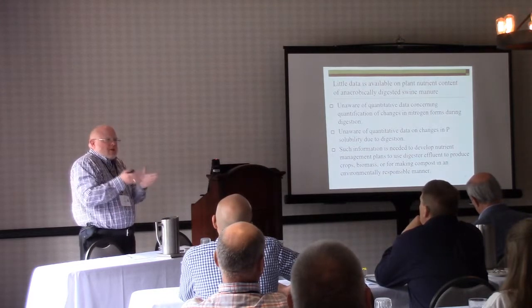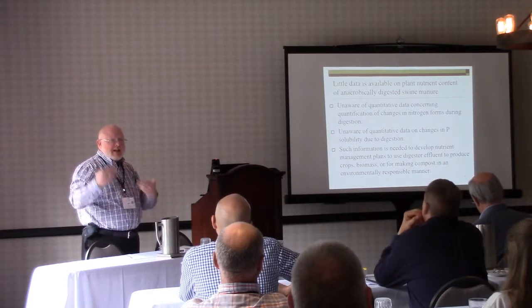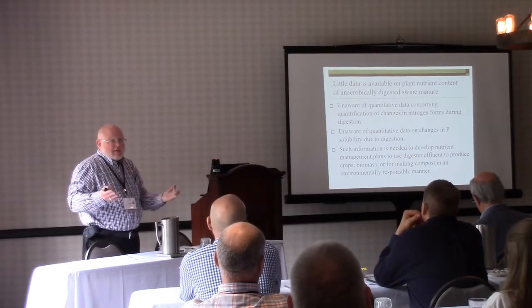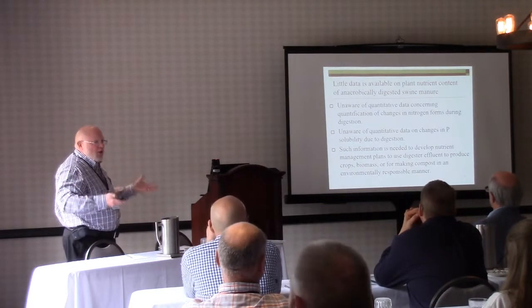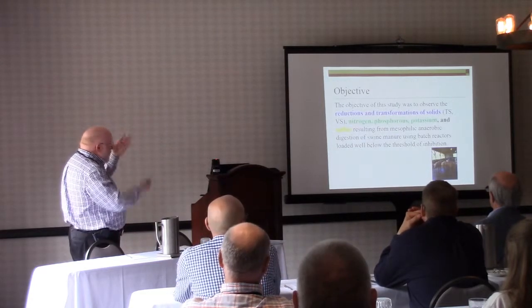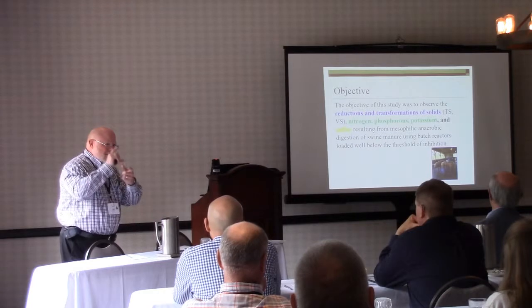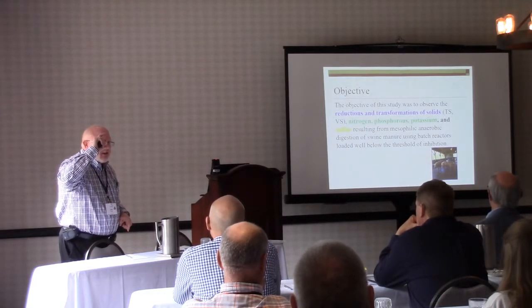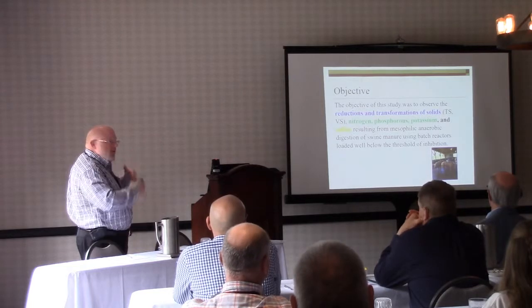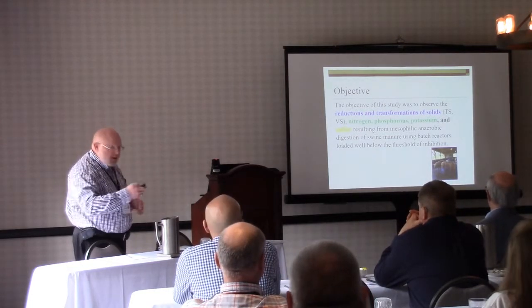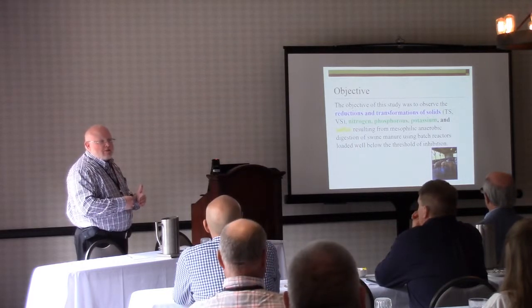Enough of the theory - we have lots of data. We have some on field digestion but I wanted to know how much organic nitrogen was mineralized, how does total ammoniacal nitrogen increase, and is there anything happening to phosphorus - is it being solubilized, is it being put into organic forms? So we looked at reductions and transformations of TS and VS. We did COD but to get representative samples in little bitty tubes you have sampling error of plus or minus 20% just in sampling alone. We examined forms of nitrogen, phosphorus, potassium, and sulfur. We used batch reactors that we verified were well below inhibition levels.